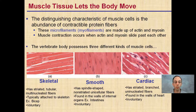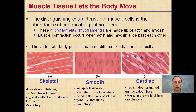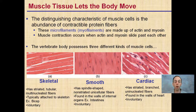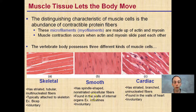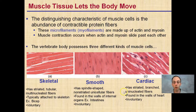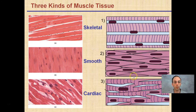There are three different kinds of muscle cells: skeletal, smooth, and cardiac. Skeletal muscle consists of striated, tubular, multi-nucleated fibers typically attached to the skeleton — for example, the bicep. They are voluntary muscles, meaning we have control over when we move them. Smooth muscle consists of spindle-shaped, non-striated, unicellular fibers, each containing one nucleus, found in the walls of internal organs such as the intestines, and is involuntary. Cardiac muscle is striated, branched, uninucleated fiber found in the walls of the heart, and is also involuntary.